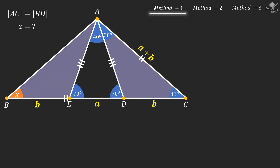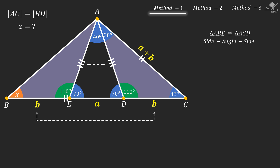Remember that we are given in the question that AC is equal to BD. Therefore, this line segment BE must be B units. Now let's focus on these two triangles. In both triangles, these angles will be equal to 110 degrees, and the line segments forming these angles are also equal. From this information, we can conclude that these two triangles are congruent by the side-angle-side rule. So corresponding angles should be equal, and from here we see that our missing angle X will be 40 degrees.